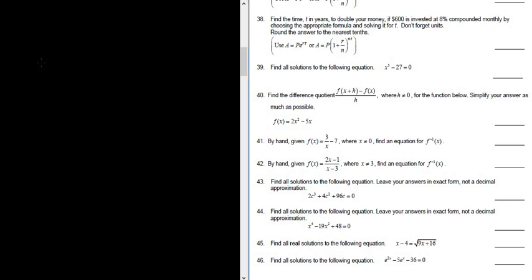So the question says 2c cubed plus 4c squared plus 96c, and it's all equal to 0.